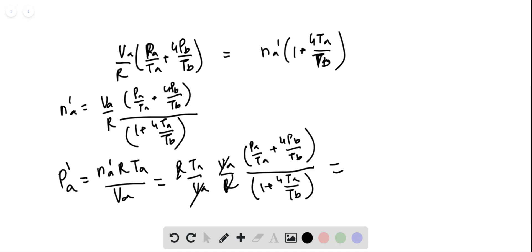We simply substitute our values here. We know that PA is 5 times 10 power 5, PB is 1 times 10 power 5, TA is 300 Kelvin, TB is 400 Kelvin. We will substitute them everywhere and we will see the final pressure equals 2 times 10 power 5 pascals. And that's it.